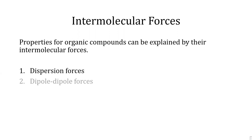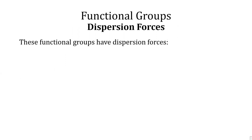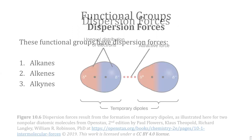Properties for organic compounds can be explained by their intermolecular forces: one, London dispersion forces; two, dipole-dipole forces; three, hydrogen bonding. Functional groups that have London dispersion forces include alkanes, alkenes, and alkynes.